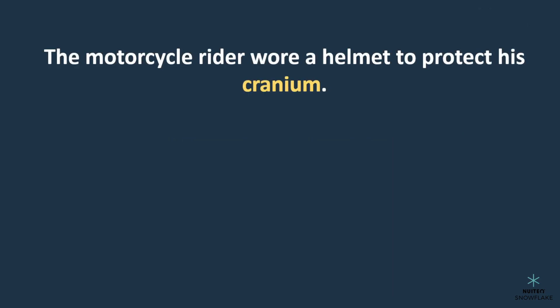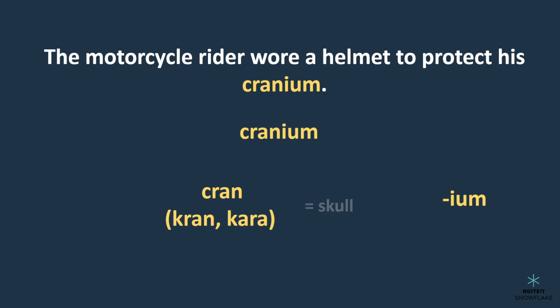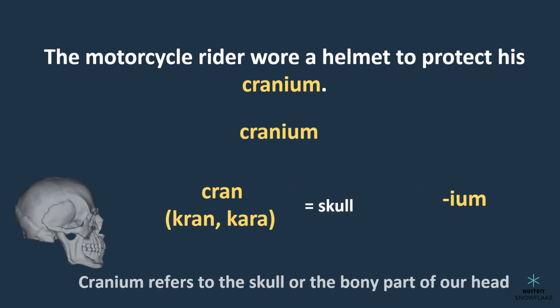The motorcycle rider wore a helmet to protect his cranium. What does cranium mean? We can see that it has the Greek root 'kron,' which means skull. So cranium must refer to the skull, or the bony part of our head that protects our brain.